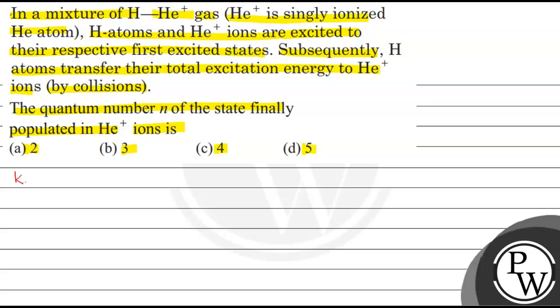Now, we use the key concept that will be the calculation of total energy, which is minus 13.6 Z square upon N square electron volt. In the question, hydrogen and helium are in the first excited state. We know for hydrogen atom, Z is equal to 1.